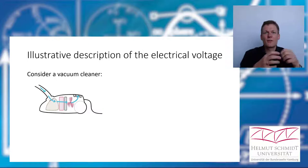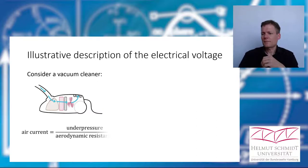If you put it out of your vacuum cleaner, then you have the maximum air current because the aerodynamic resistance is small. And we can describe this with an equation. Our air current will be bigger when the under pressure is bigger and it will be also bigger when the aerodynamic resistance decreases. Therefore, we can describe it with this equation.